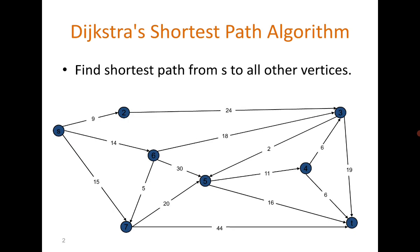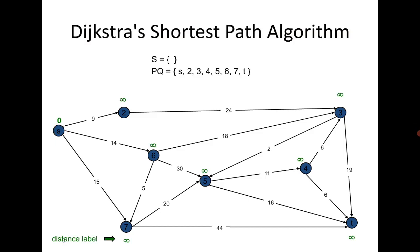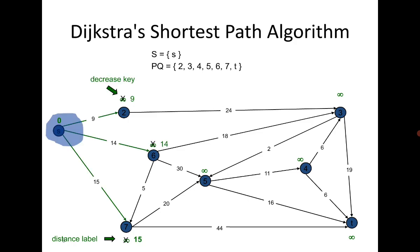Initially we begin with s. We assume the distance is infinite to all vertices, and we are going to update the distances so that in the end we have the shortest distances. From s, vertex 2, 6, and 7 are reachable with distances of 9, 14, and 15 respectively, so we update them.